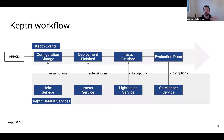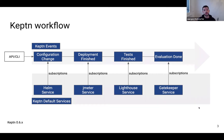The next event is the tests finished event, and here we have our Lighthouse service, which is basically the implementation of the Keptn quality gate. It listens for tests finished events, starts the evaluation, and informs Keptn when the evaluation is done. The next part would be the Gatekeeper service, which decides if we start again with a configuration change in the next phase or if we roll it back. We do have some default services, but because of this event-based mechanism, you can also subscribe with your own services.